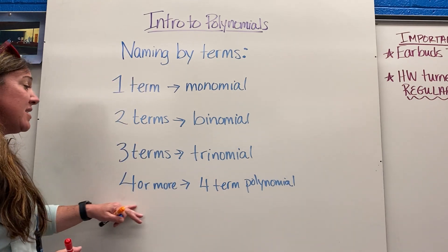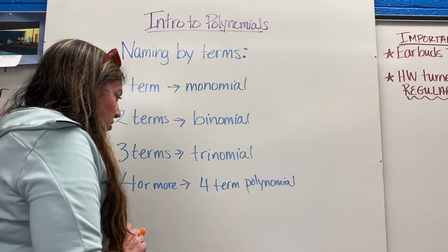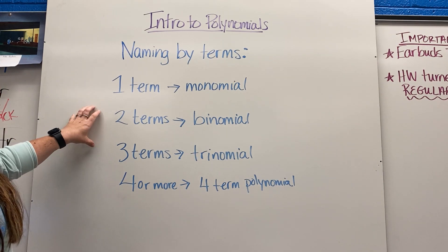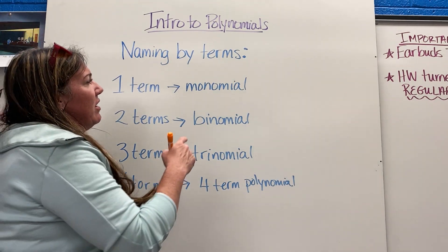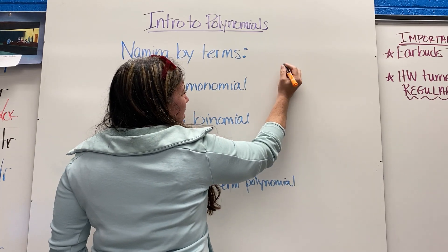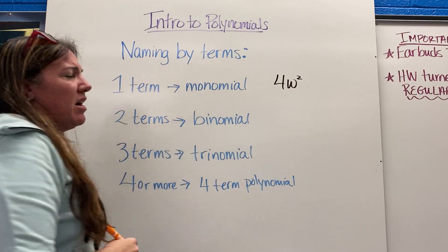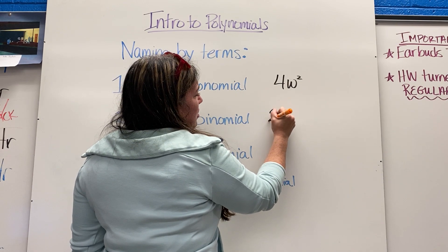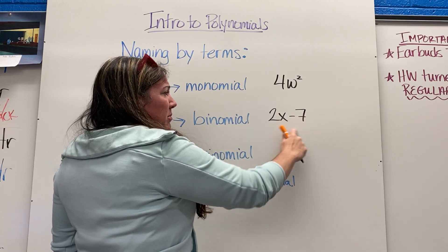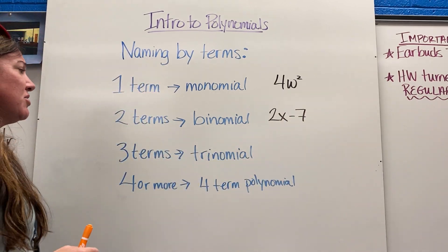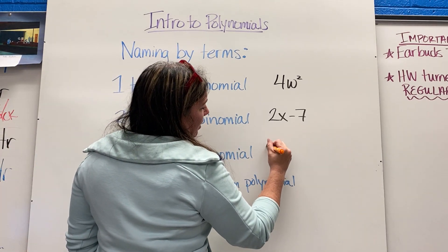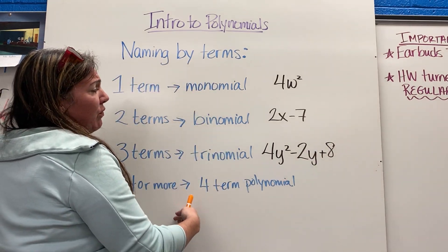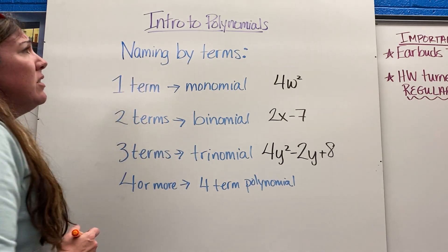If there are four or more terms, we say it's a four-term polynomial, a six-term polynomial, or even a 500-term polynomial. A monomial is something by itself, like 4w squared — no adding or subtracting. A binomial has two terms, like 2x minus 7 — terms are separated by addition and subtraction. A trinomial could be 4y squared minus 2y plus 8 — three parts.